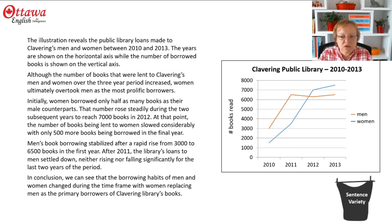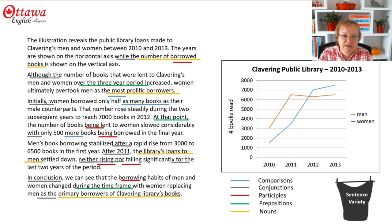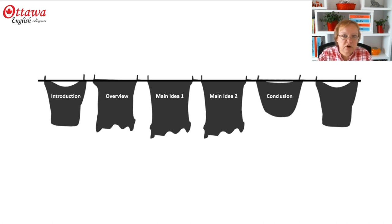In amongst all of this, we're going to have some nice sentence variety. We've got some fairly conventional comparative forms, lots of conjunctions, lots of participles that give our language that nice flow, several prepositional phrases, and some nice noun phrases that are a little bit longer than just using a simple pronoun or a simple noun. So essentially when tackling a graph, we're looking for a nice introduction, an overview from across the room with no details, one main idea and a second main idea developed with details, a conclusion, and lots of sentence variety.